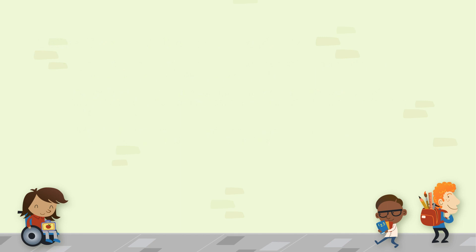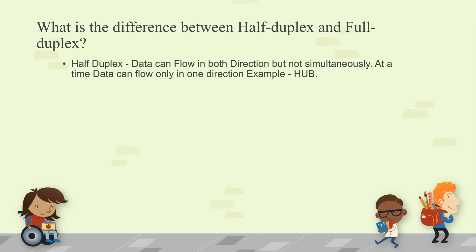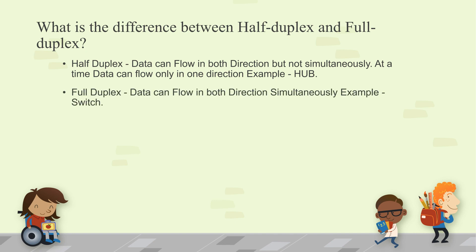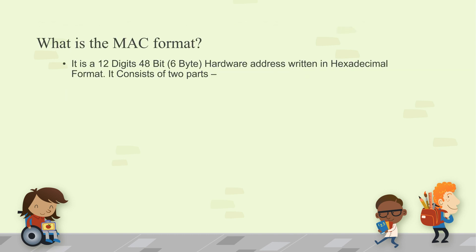What is the difference between half duplex and full duplex? In half duplex, data can flow in both directions but not simultaneously — at a time, data can flow only in one direction. An example is a hub. In full duplex, data can flow in both directions simultaneously. An example is a switch.